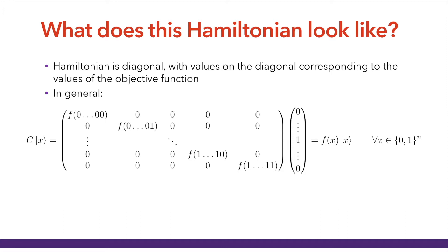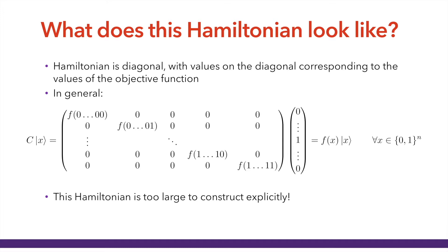This is what we're looking for — this is what it means for the Hamiltonian to realize a classical function. We want it to act on any computational basis state as the value of the function: C applied to |x⟩ should equal f(x)|x⟩. Note that this Hamiltonian is too large to construct explicitly — it's 2^n by 2^n, so it's exponential in size. And if we were to construct it explicitly, it's a silly way of solving the problem, because you'd just go to the diagonal, pick the largest element, and that would be your solution — you don't need a quantum computer for that.